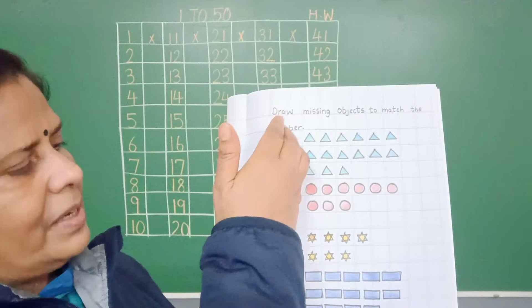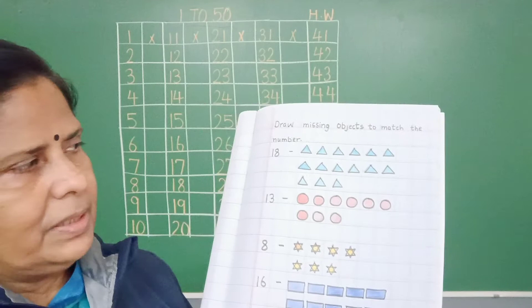So children, I have told you reading is a must. You will read every day, 1 to 50 in a sequence. Today we will do an exercise. Draw missing objects to match the number. What do you do? Here we have numbers. Here we have objects.